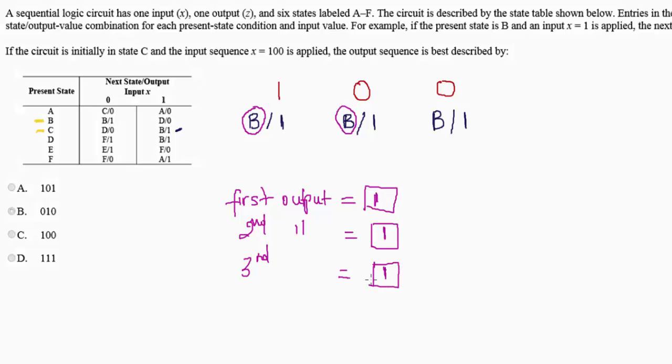Now the sequence is over because our input sequence was only one zero zero. Now if we're given one zero one zero one, we just follow the logic by next state slash output, etc., to get the final output. So here we can stop and we can see that the final answer is D as in one, one, one. And that's pretty much it.